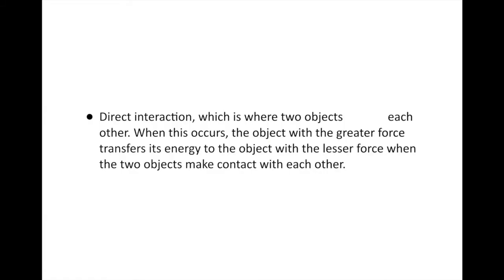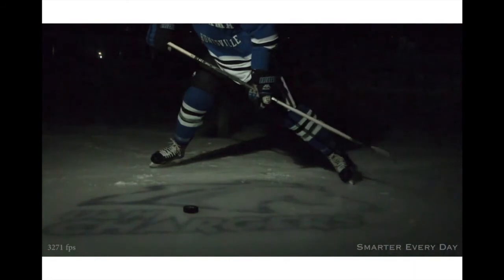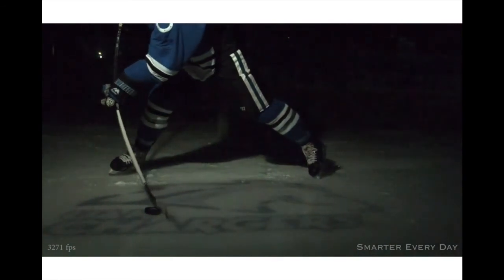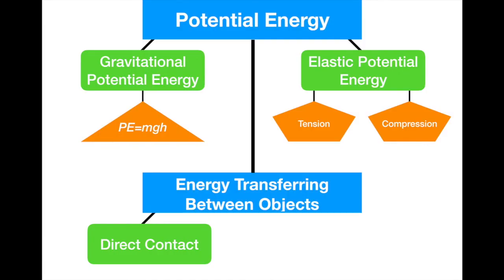The first type is direct interaction, which occurs when two objects touch each other. When this occurs, the object with the greater force transfers its energy to the object with the lesser force. As we can see with this slap shot, the greater force is the hockey stick and the lesser force is the hockey puck sitting there. When the slap shot makes contact with the puck, the kinetic energy of the hockey stick is transferred to the hockey puck, and as a result, it moves. That's energy transferred through direct contact.